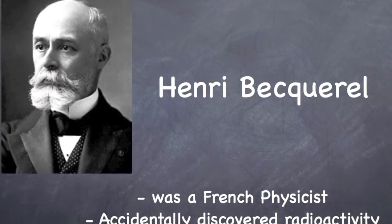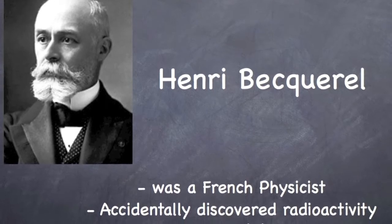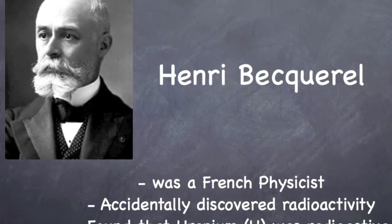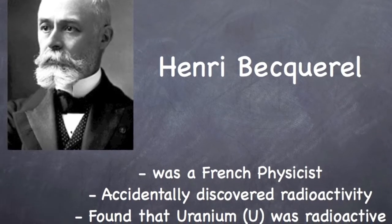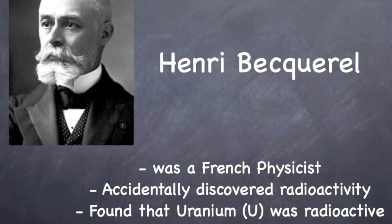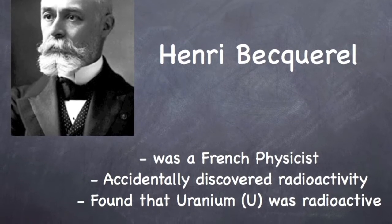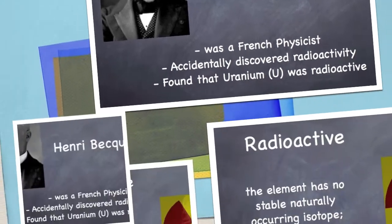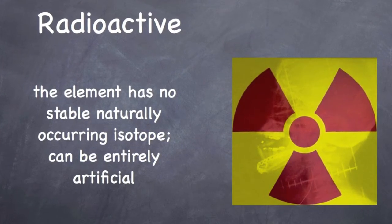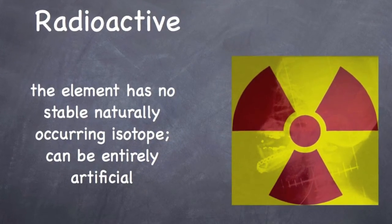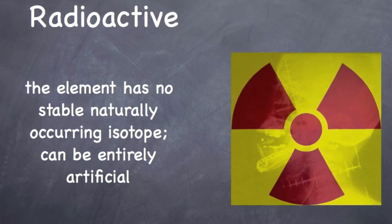In 1896, a French physicist named Henri Becquerel accidentally discovered radioactivity. His investigations of the properties of fluorescent minerals led to the discovery of radiation. The mineral he worked with was called uranium — a radioactive substance because it is an element that has no stable naturally occurring isotope.